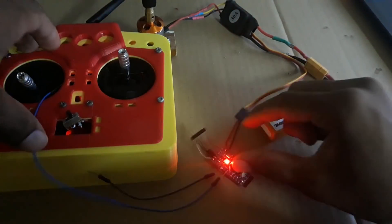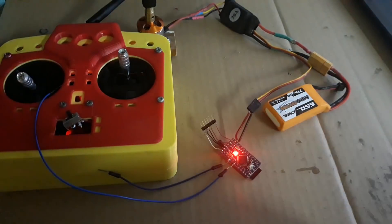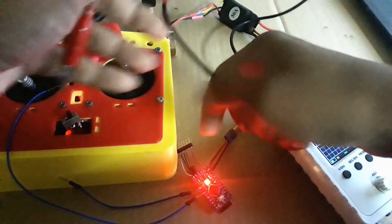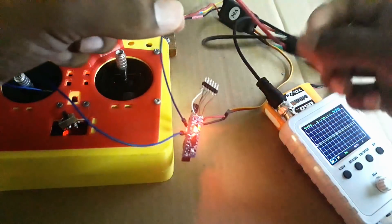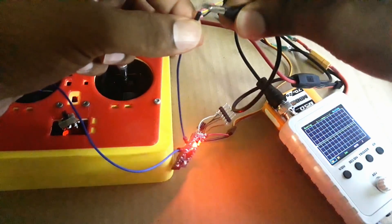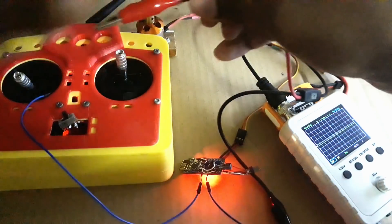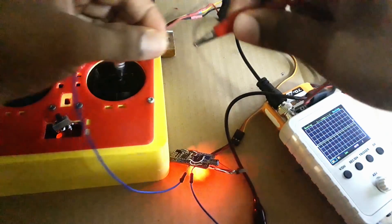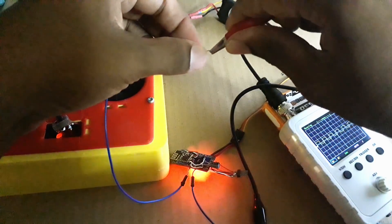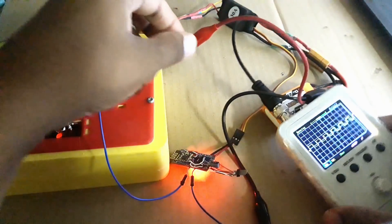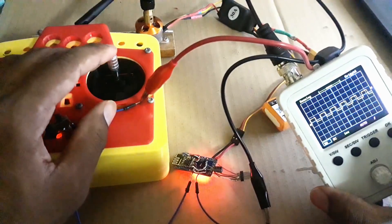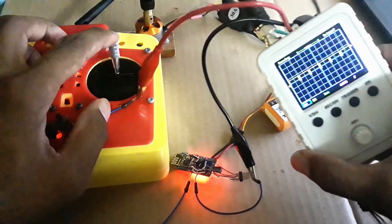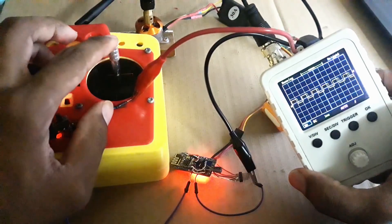So first of all, I will use my oscilloscope to check if we are receiving the signal from the transmitter. I am connecting the ground to the ground and the positive to the digital pin 3. And you can see this is the PWM signal that we are receiving and we can vary it using our transmitter. So our transmitter is working very well.